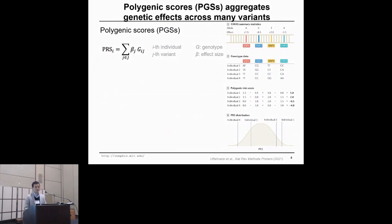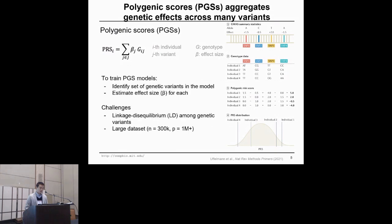In the polygenic risk score framework, we characterize the set of genetic variants relevant for trait prediction and estimate their effect sizes in a multivariate regression framework. Basically, you need to find which variants are relevant and also estimate their effect sizes from very high-dimensional data consisting of more than one million variants.